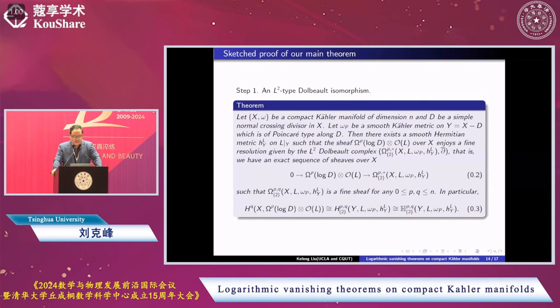Now let me briefly sketch the argument. My idea is to consider this L2-type Dolbeault isomorphism. We first find the L2 sheaf resolution of this sheaf we consider. We want to prove the vanishing. We consider a compact Kähler manifold and a simple normal crossing divisor with a smooth Kähler metric omega on Y equals X minus D, an open manifold. A standard metric is a complete metric of Poincaré type with complete finite volume. It's a very good metric canonically used in many cases.